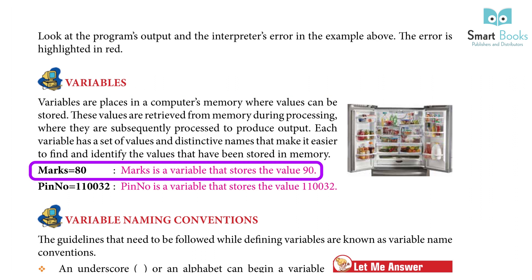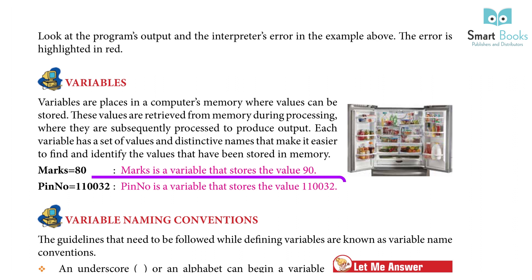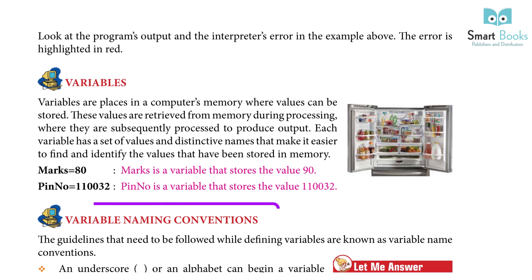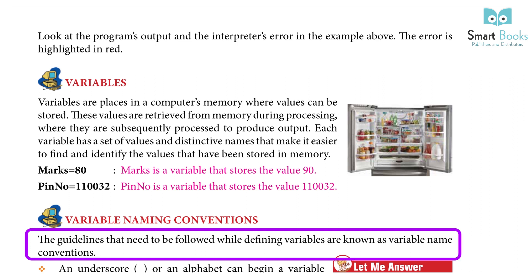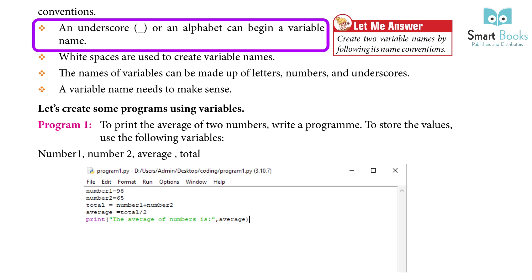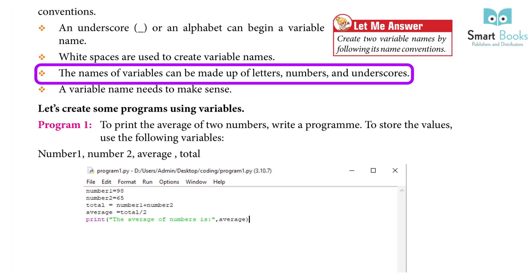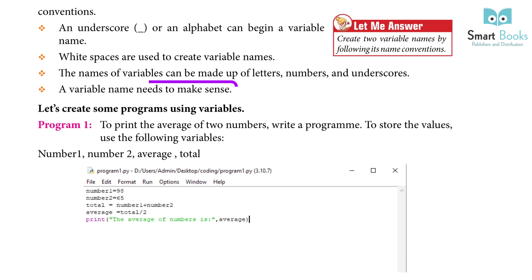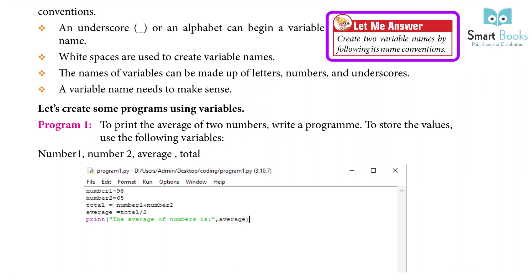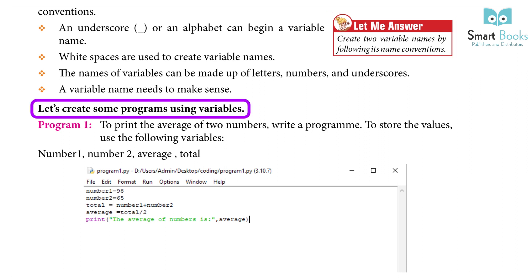For example, Mark stores the value 80, and Marks is a variable that stores the value 90. Variable names can be made up of letters, numbers, and underscores. A variable name needs to make sense. Let's create two variable names by following naming conventions.